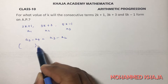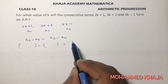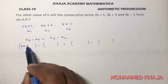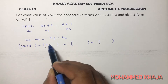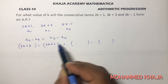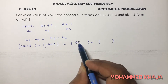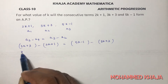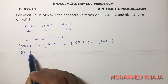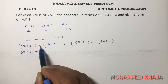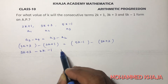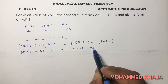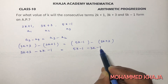So here a2 is 3k+3, a1 is 2k+1, a3 is 5k-1, a2 is 3k+3. So: (3k+3) minus (2k+1) equals (5k-1) minus (3k+3).